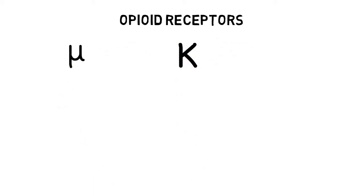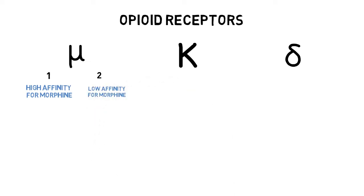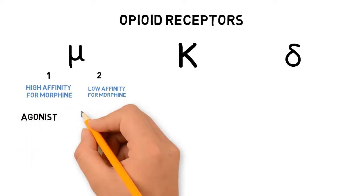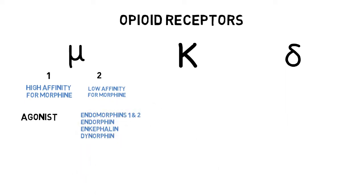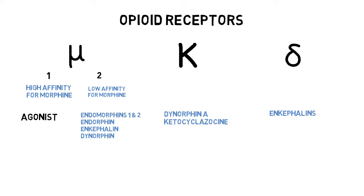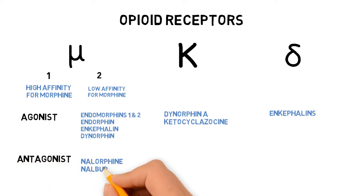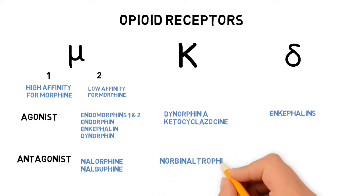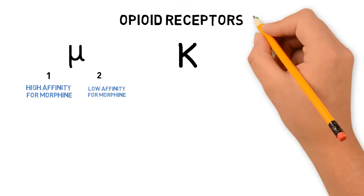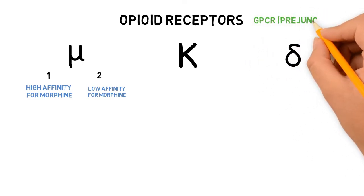Opioids exert their action by acting on three types of opioid receptors: mu, kappa, and delta. Mu receptors are further divided into mu1 and mu2 depending on their affinity for morphine; morphine has higher affinity for mu1 than mu2. Specific agonists for mu are endomorphins 1 and 2, endorphins, and dynorphins. The agonist for kappa is dynorphin, ketocyclazocine; for delta it is enkephalin. The specific antagonist for mu is nalorphine and nalbuphine; for kappa it is bremazocine; and the antagonist for delta is naltrindole.